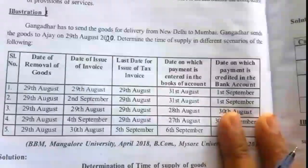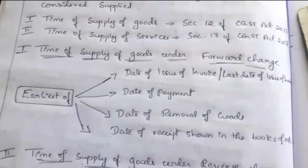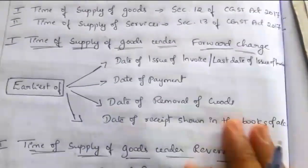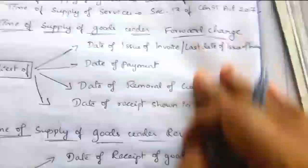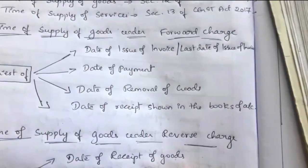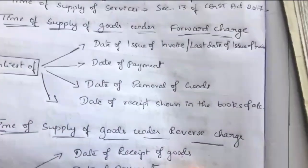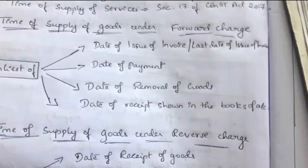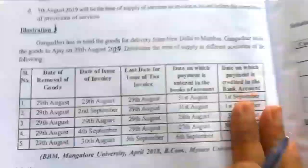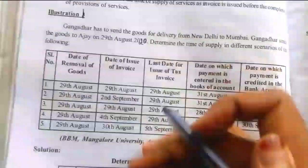Time of supply means we have to take the earliest among the dates. It might be date of issue of invoice, last date of issue of invoice, date of payment, date of removal of goods, or date of receipt shown in the books of account. So the earliest date we have to take as the time of supply.